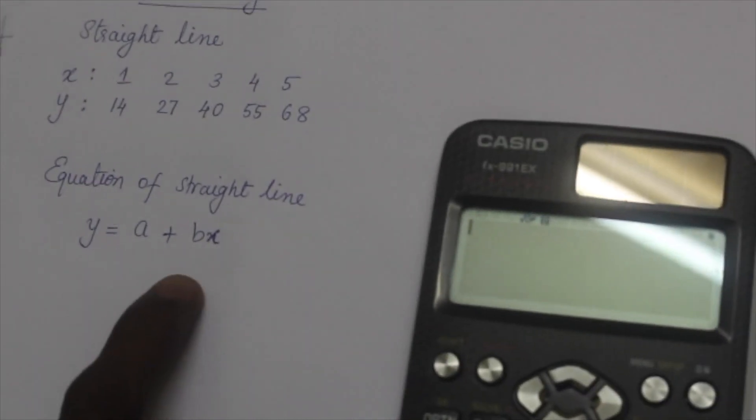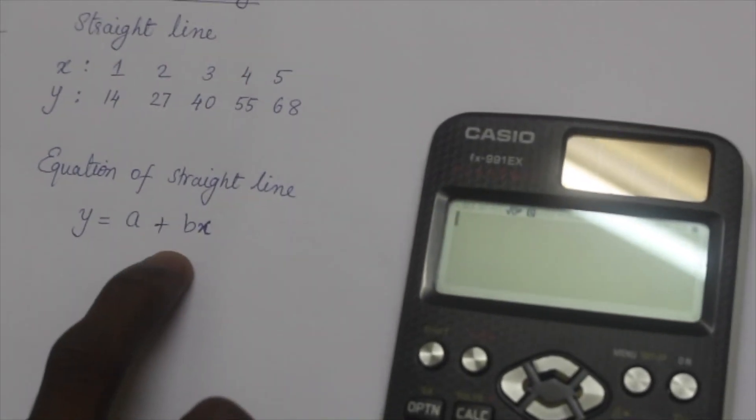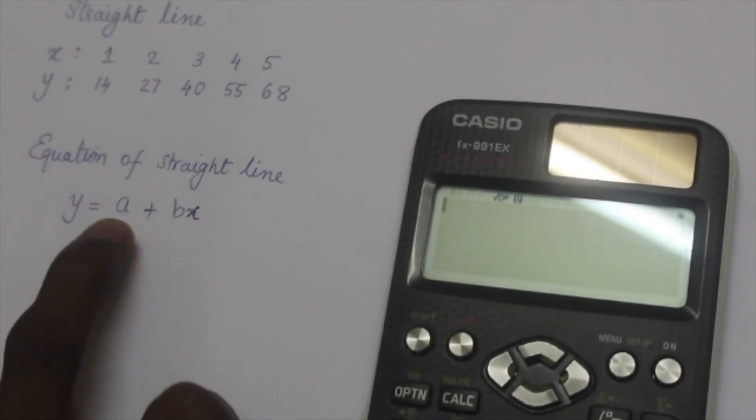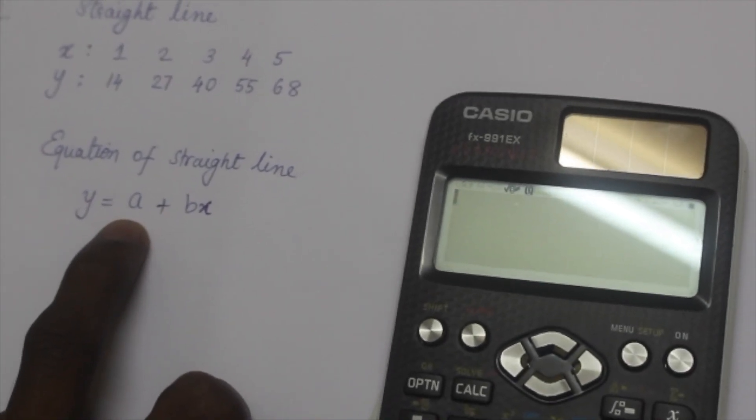The y values are related to x. So we can write the equation of the straight line as y is equal to a plus bx. Here the variable b represents the slope of the straight line and a represents the intercept.